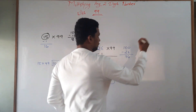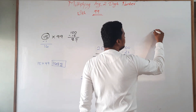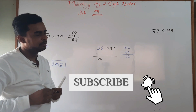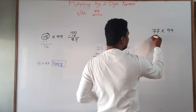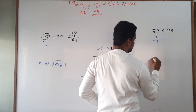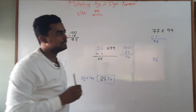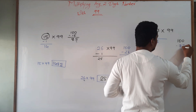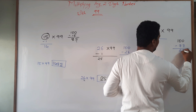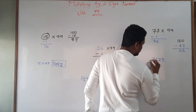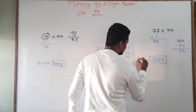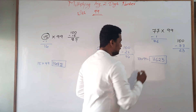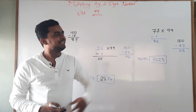Now let us jump to numbers bigger than 50. Same trick will be repeating. Let us say 77 multiplied by 99. Subtracting 1, I will get 76 — so the first two digits are 76. Next, 100 minus 77 gives me 23, and this will be my final two digits. So 77 multiplied by 99 is equal to 7623.